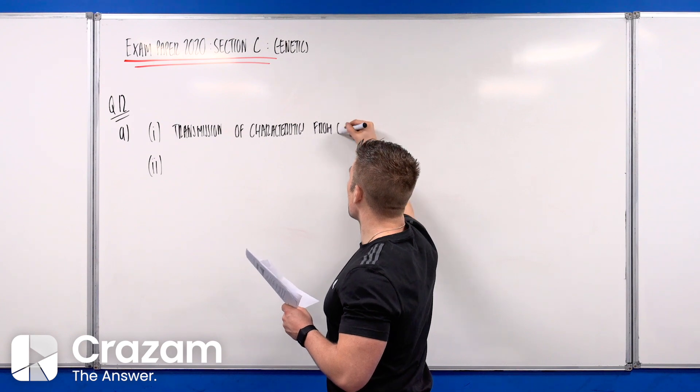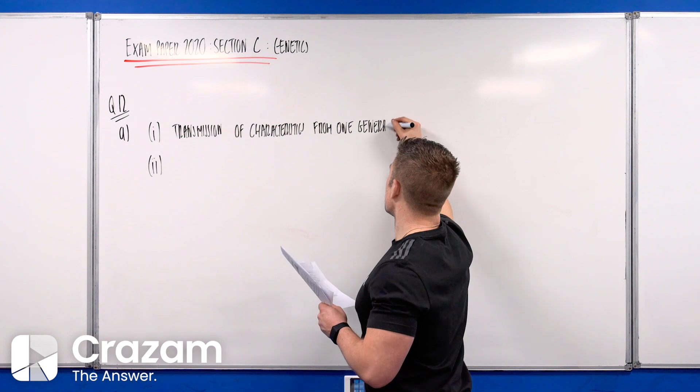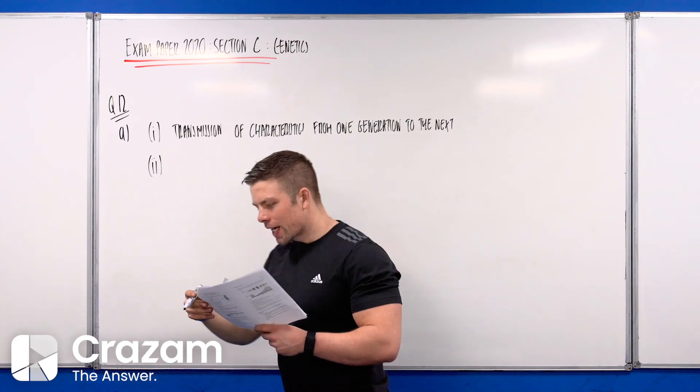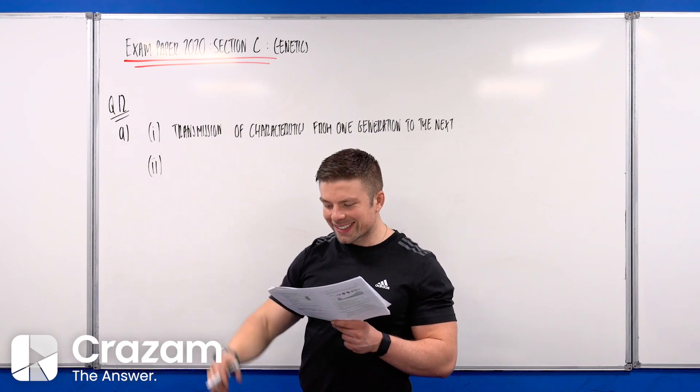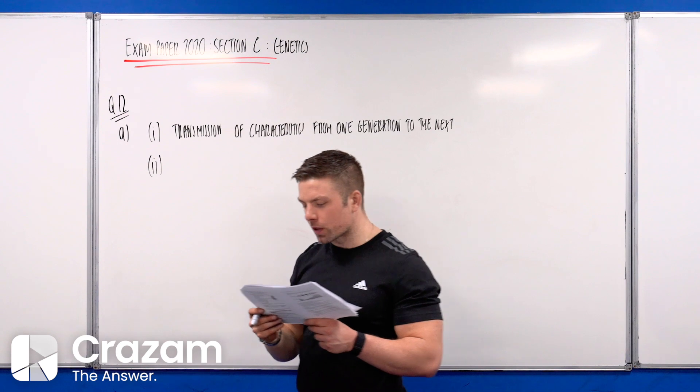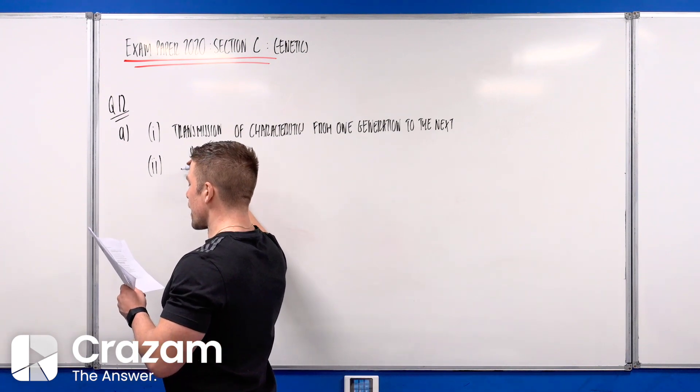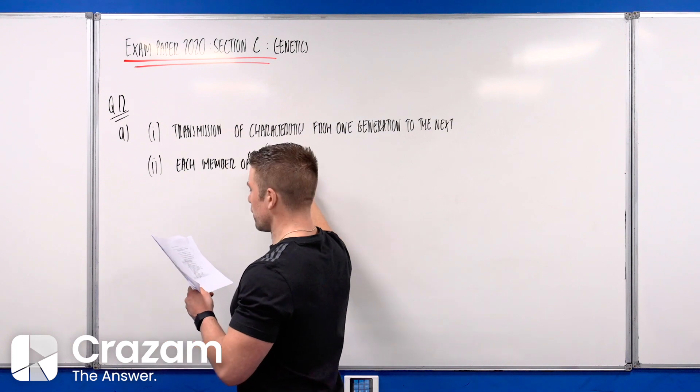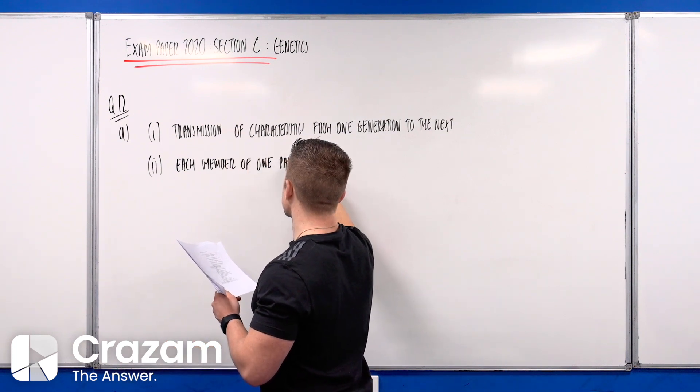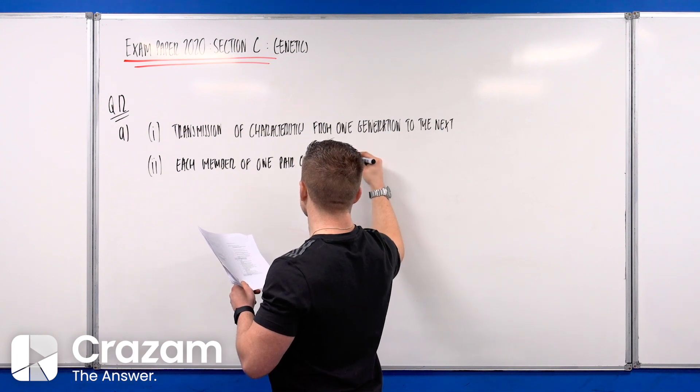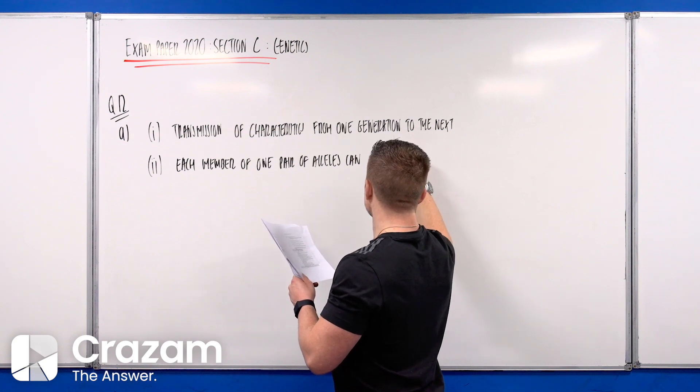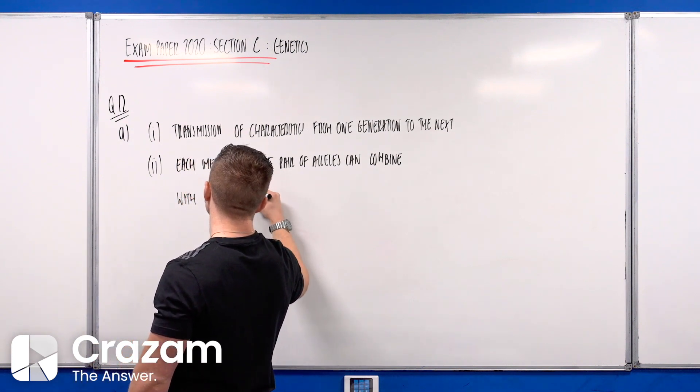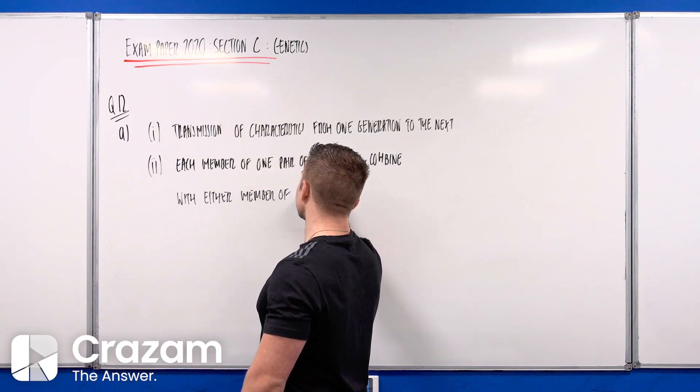It then says state Mendel's law of independent assortment. There are different ways of saying this, but what we're going to say is: each member of one pair of alleles can combine with either member of another pair of alleles.